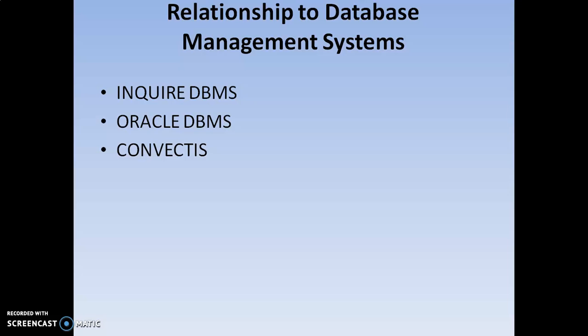Next is the relationship to database management systems — how information retrieval systems relate to DBMS. In database management systems, the data contains directly structured data. But in information retrieval systems, data is stored in both structured and unstructured form. When integrating DBMS with information retrieval systems, three different kinds of databases are used: Inquire DBMS, Oracle DBMS, and Convictus. These are various database servers that provide accessibility for both database management systems and information retrieval systems.